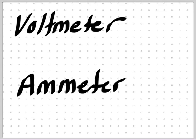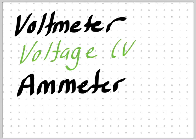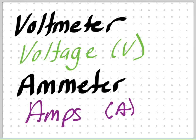Voltmeters usually measure the voltage — the sign for voltage is V. Ammeters usually measure the amps, and the sign for that is A. This is the current; it measures the current.